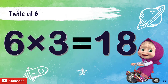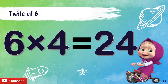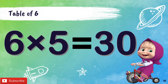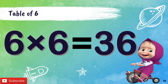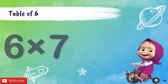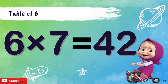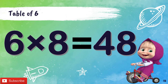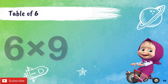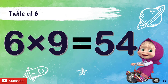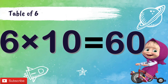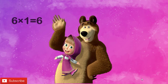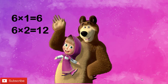Table of 6: 6 1's are 6, 6 2's are 12, 6 3's are 18, 6 4's are 24, 6 5's are 30, 6 6's are 36, 6 7's are 42, 6 8's are 48, 6 9's are 54, 6 10's are 60.